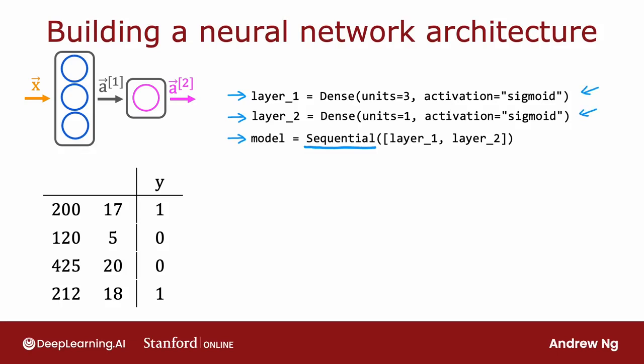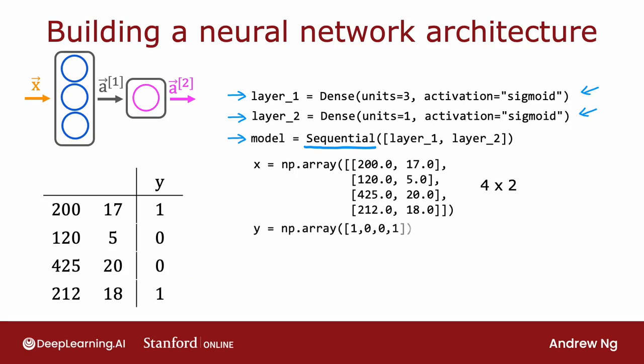It turns out that with the sequential framework, TensorFlow can do a lot of work for you. Let's say you have a training set like this on the left. This is for the coffee example. You can then take the training data's inputs x and put them into a numpy array. This here is a 4 by 2 matrix.